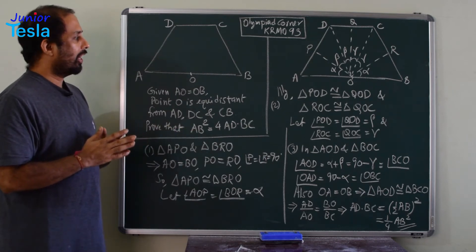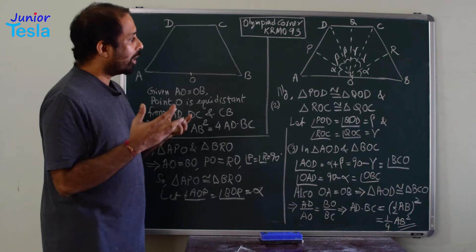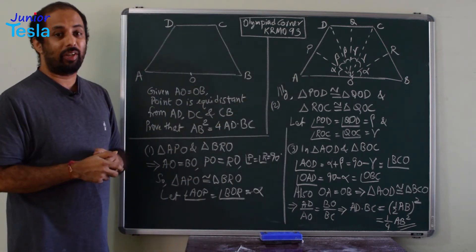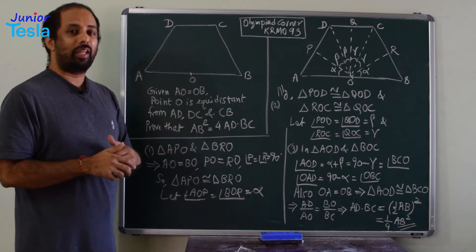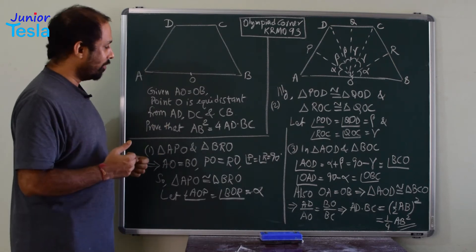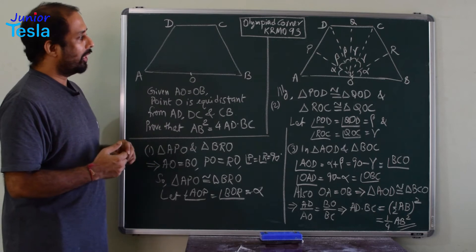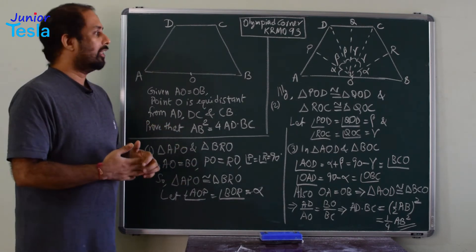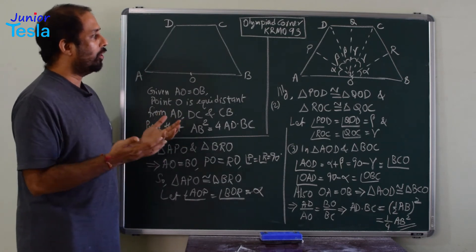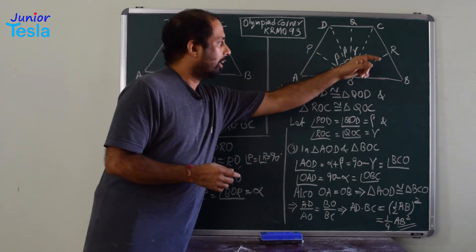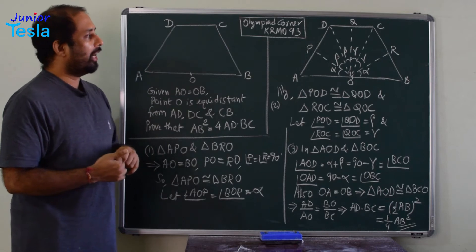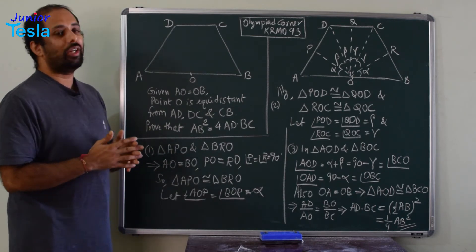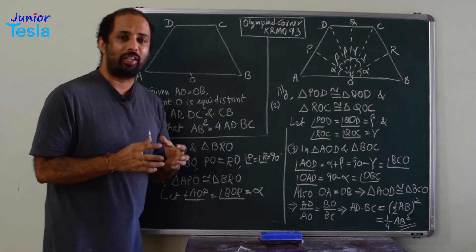How do we start? We can start by comparing some of the triangles. For example, triangles AOP and BOR — we can take these two triangles because two sides AO and BO are equal, so there may be some connection. In triangle APO and triangle BRO: AO = BO (given), OP = OR (given, since point O is equidistant from sides AD and BC), and angles OPA and ORB are both 90°. So we can say triangle AOP is congruent to triangle BOR. We found one pair of congruent triangles.